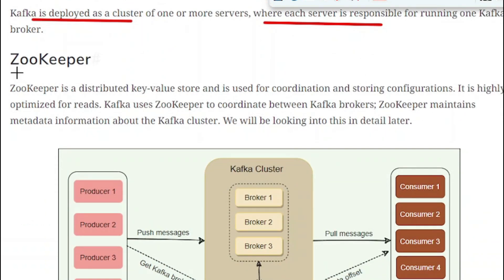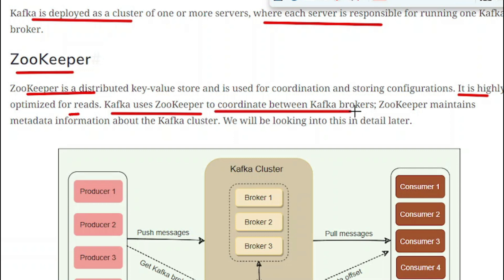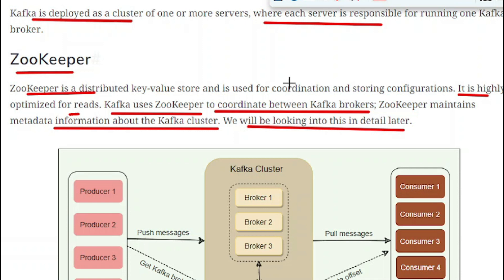Next, Zookeeper is a distributed key-value store used for coordination and storing configurations. It is highly optimized for reads. Kafka uses Zookeeper to coordinate between the Kafka brokers. Zookeeper maintains metadata information about the Kafka cluster. We will look at Zookeeper in more detail later. At a high level, Zookeeper is used to store information related to the Kafka cluster.